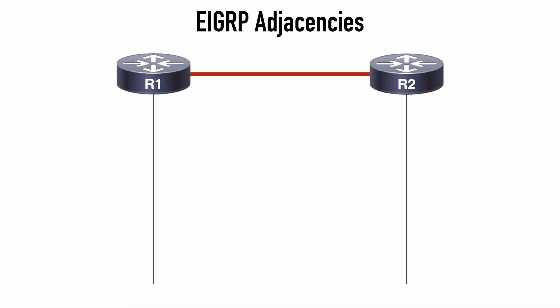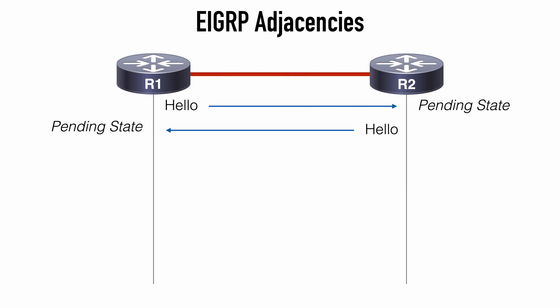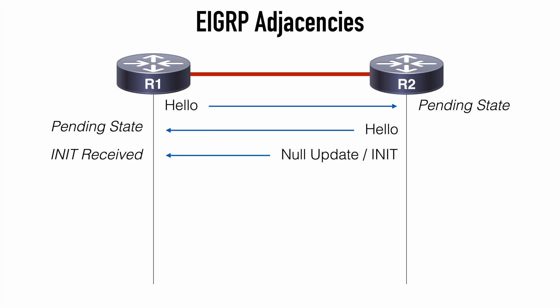When EIGRP routers become neighbor adjacencies, that starts with a hello packet. Let's say we enable EIGRP on both routers and R1 was the first to send a hello packet. These are sent to the appropriate multicast address and contain essential configuration information such as the autonomous system number and K values. Once R2 receives a hello message, it prioritizes sending back its own hello message so that R1 is aware of the neighbor. This puts both routers into the pending state, meaning they are waiting to form bidirectional connectivity before exchanging routing information. R2 then sends a unicast null update packet to R1 containing no routing information. This null update has a flag set instructing the neighbor to advertise its routes — that's called the init flag.